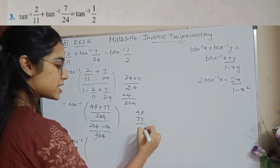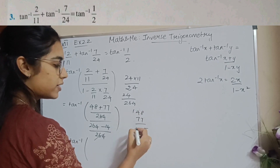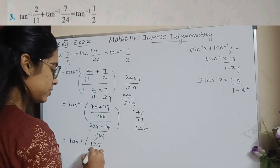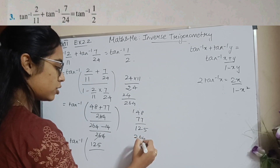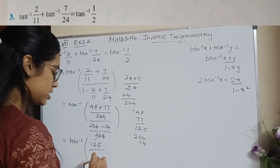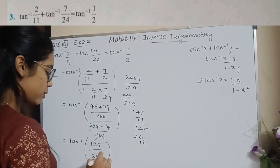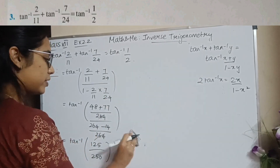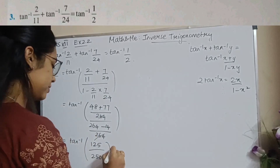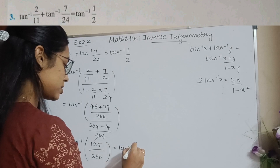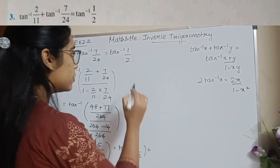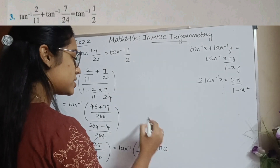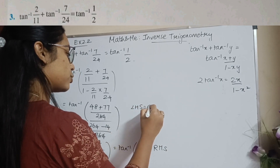So 48 + 77 = 125 in the numerator, and 264 - 14 = 250 in the denominator. Simplifying: 125/250 = 1/2. So LHS = tan⁻¹(1/2), which is the RHS. Hence LHS = RHS, proved.